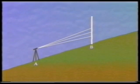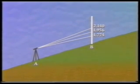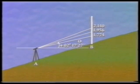Consider an example where with the theodolite at A and the staff at B, hair readings of 2.140 meters, 1.956 meters, and 1.774 meters are obtained, and the vertical angle, which is an angle of elevation, is measured as 2 degrees, 17 minutes, 27 seconds.